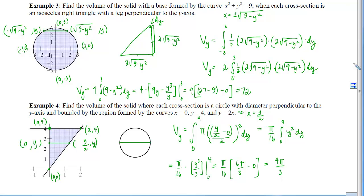Now that we've done the four examples, think about where you're going to encounter the most opportunity for error — which shape, which sorts of graphs, etc. Think about where you might make errors so that you can plan ahead and watch for those times.